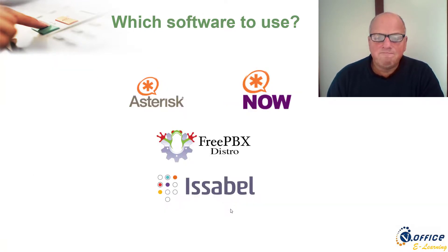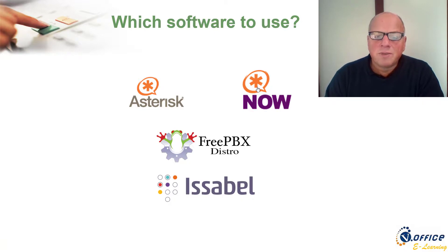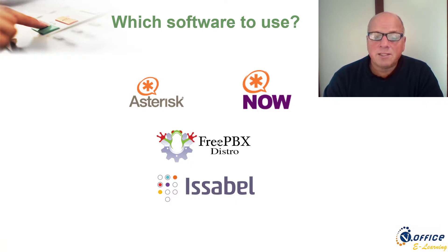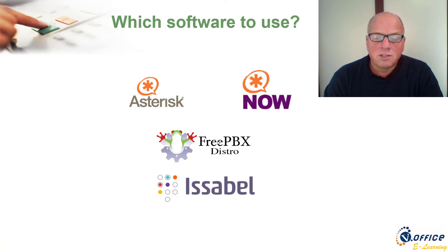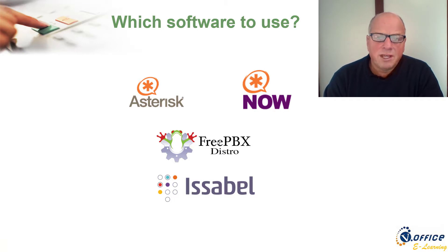Which software to use? There is Asterisk, which we'll use in this training — you install the server and then install the software. There is AsteriskNOW, a distro that installs the operating system and Asterisk, and also installs FreePBX. You can also use the FreePBX distro from Sangoma, which bought Digium some years ago. In Latin America, it's very common to use Issabel, which is a fork of the famous Elastix project. Elastix was bought by 3CX, which closed the source, so people forked it into Issabel.